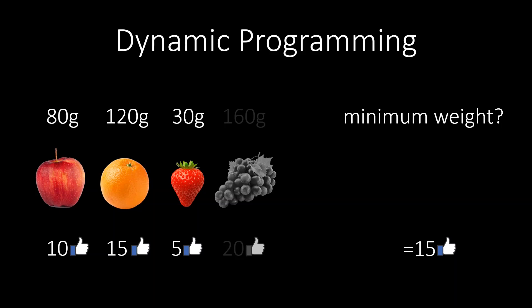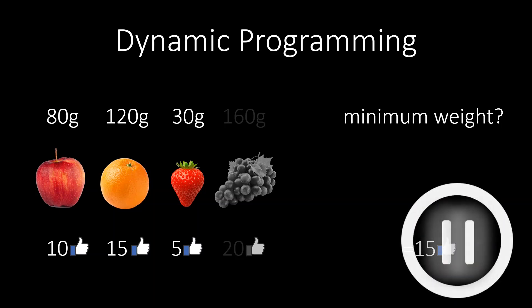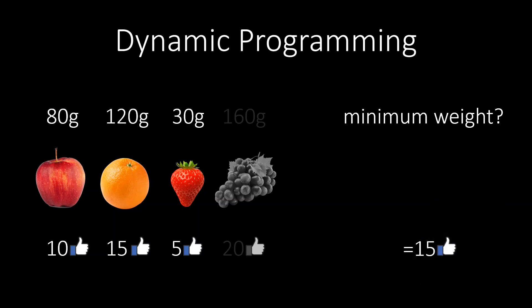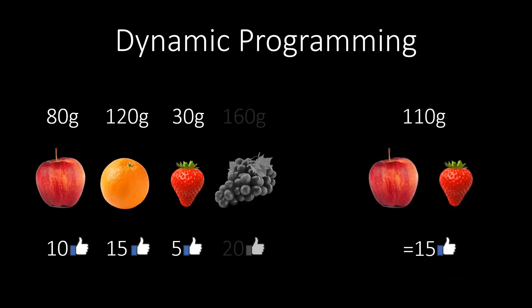Pause the video, to think about what the answer to this sub-problem is. In our example, the lightest subset with value 15 consists of the apple and the strawberry. Together they weigh 110 grams. The only other possibility for a subset of value 15, is choosing only the orange. But this is heavier.